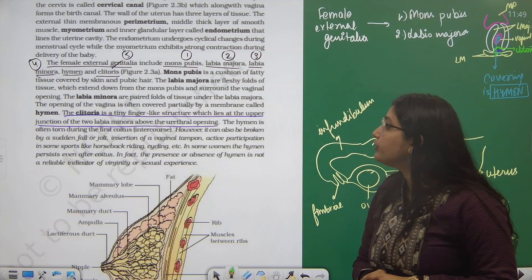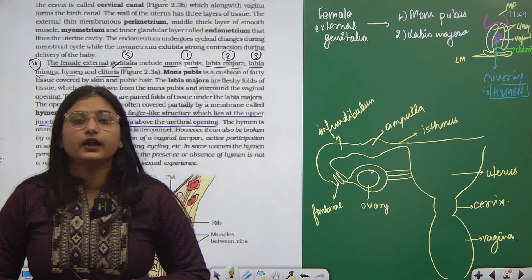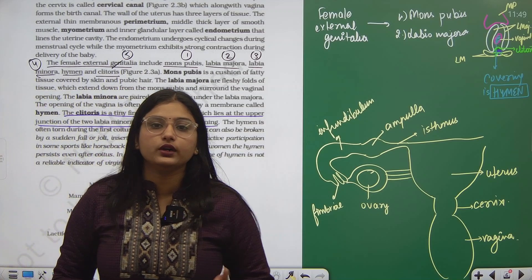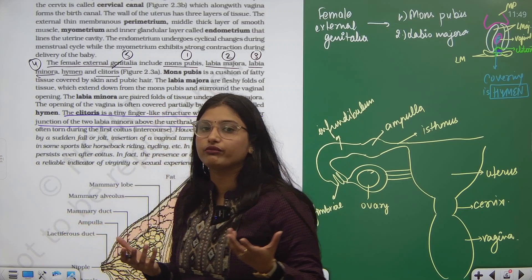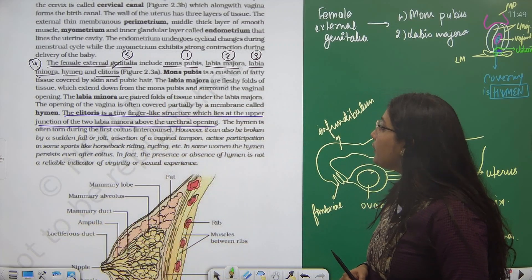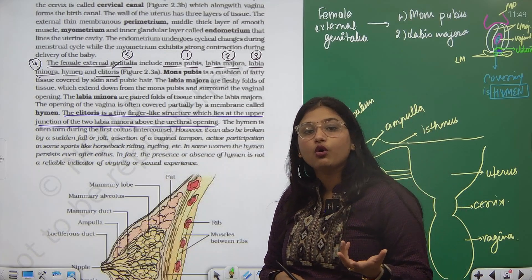The hymen is often torn during the first coitus or intercourse. That time only there is a penetration in the vagina due to which this hymen often gets broken. However, it can also be broken by a sudden fall or sudden jerk.